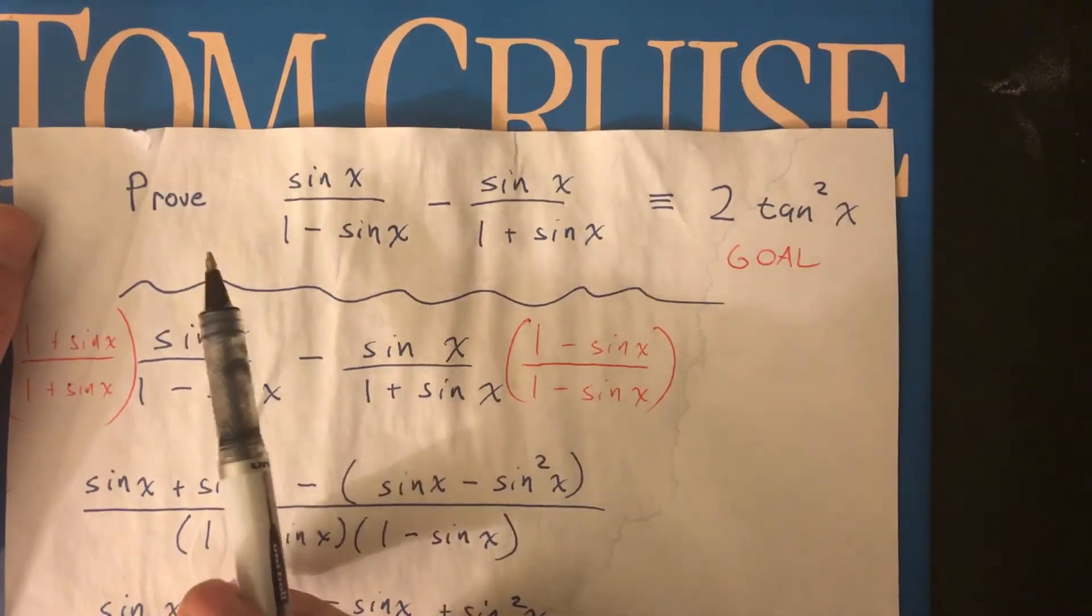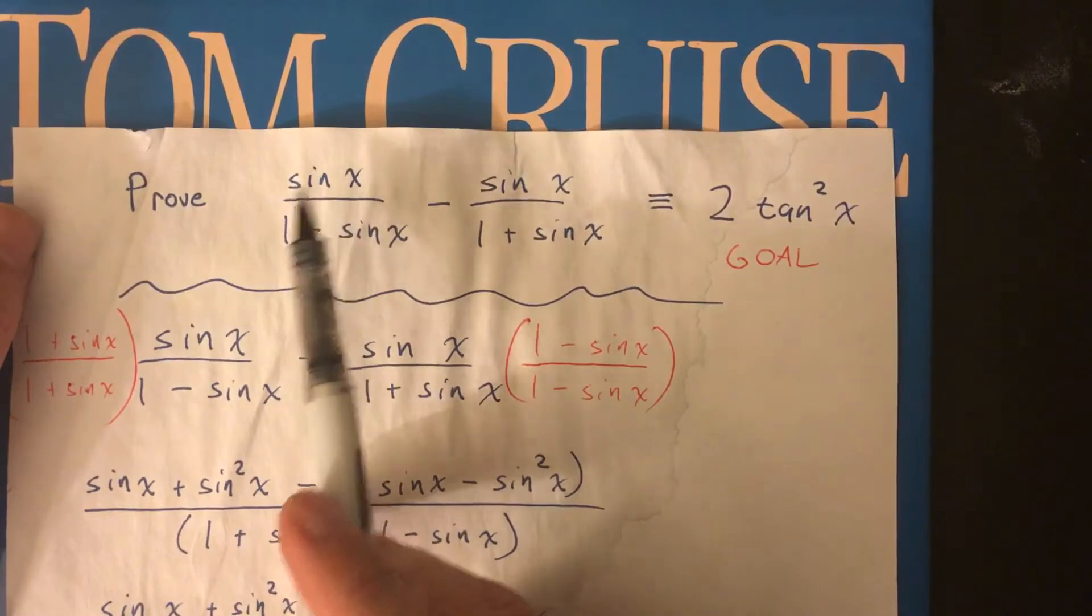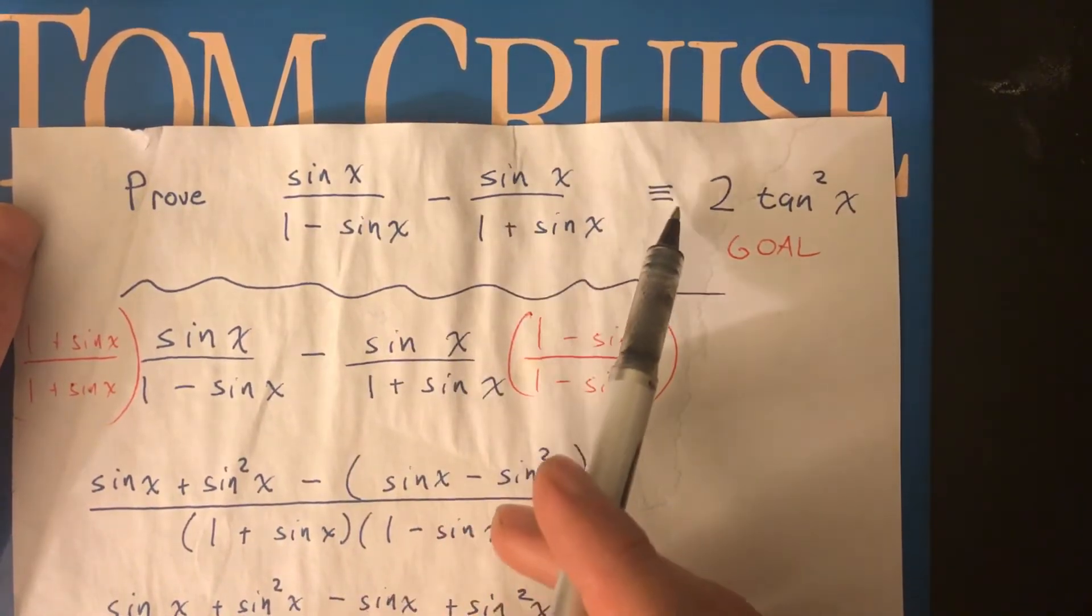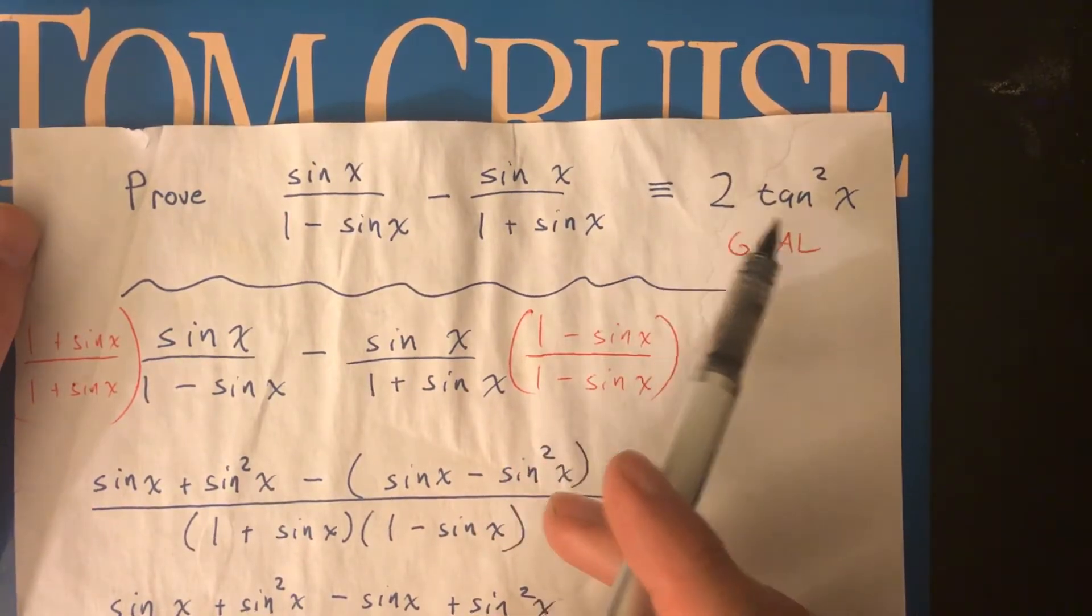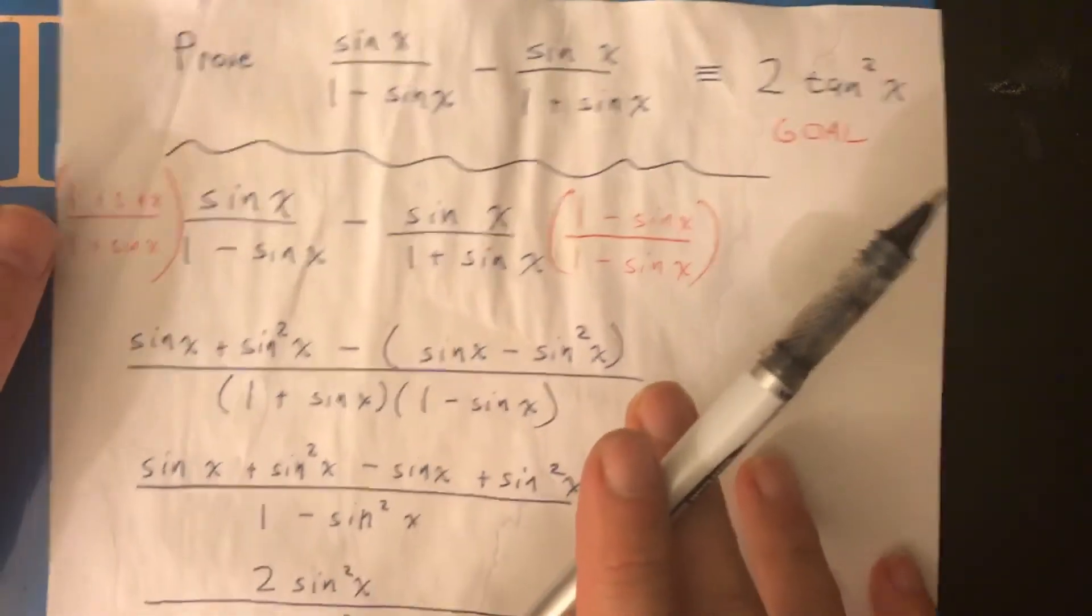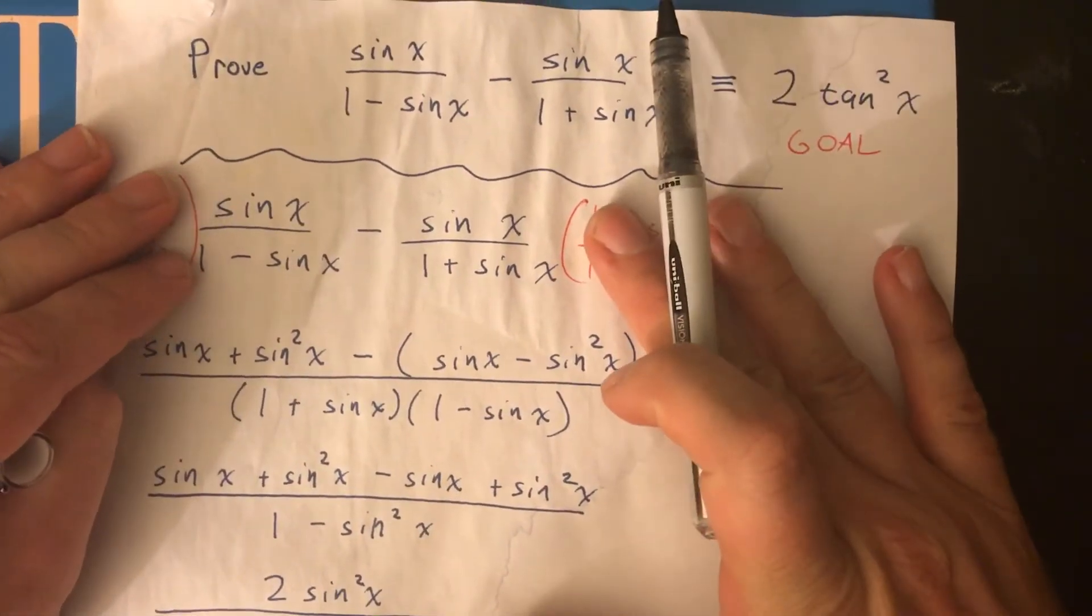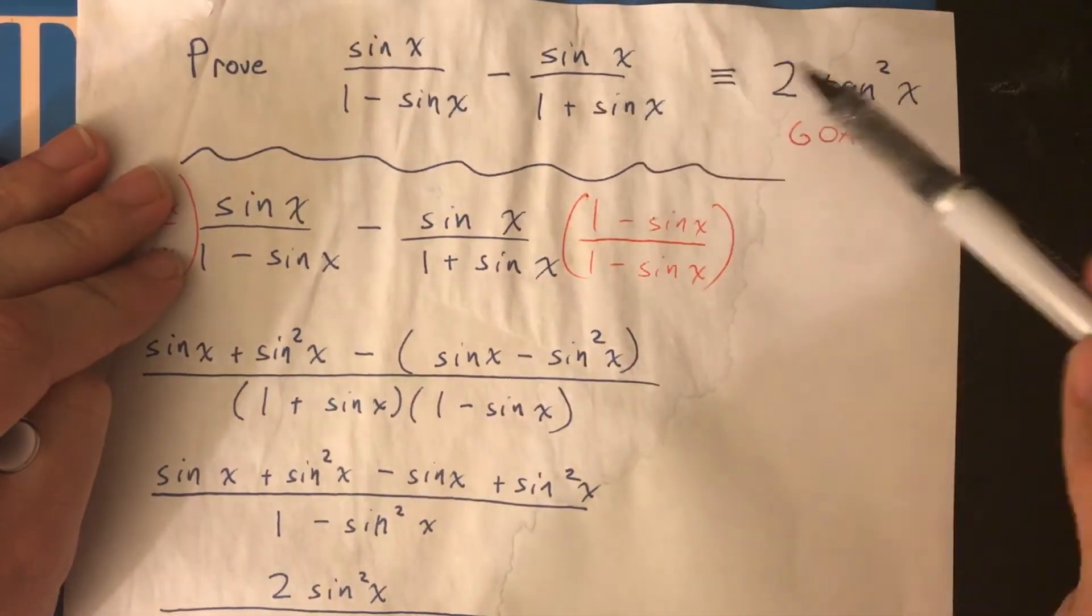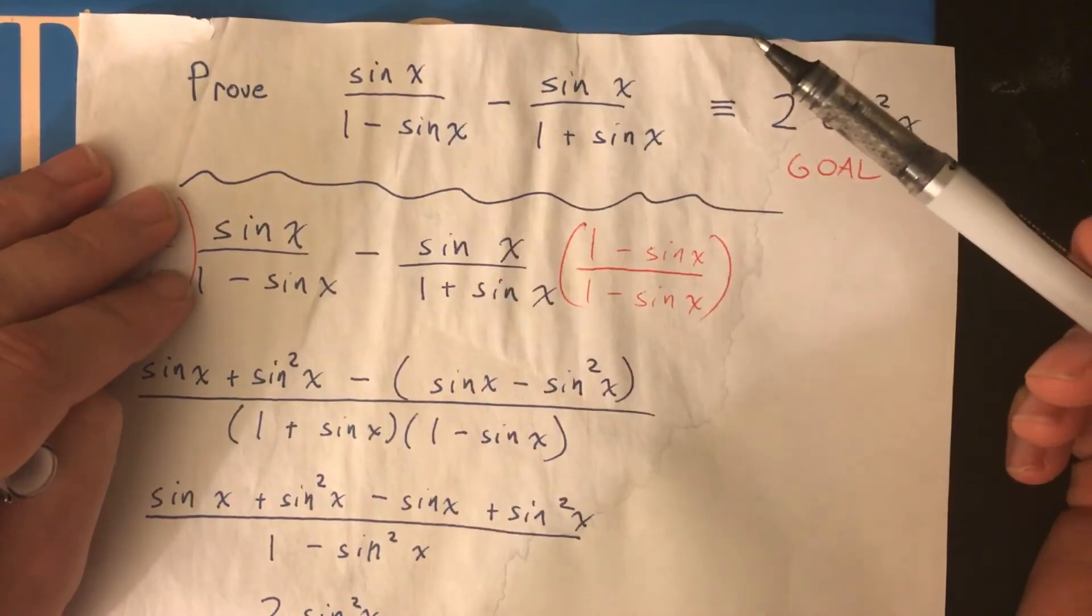But we persevere, nonetheless. So here was one I got off an ACE test. Prove that sine over 1 minus sine x minus sine over 1 plus sine x. This basically equals, means congruent, to 2 tan squared. So we restart the problem, and we just start with the left expression. Notice we're not changing the equation, we're just taking one of the expressions and just writing it to start out with.